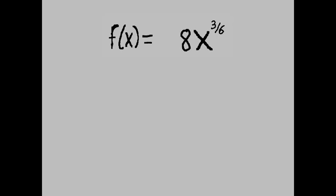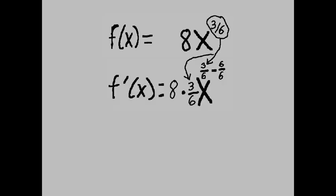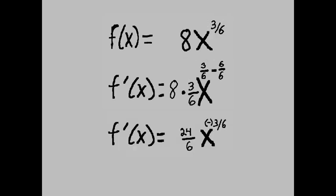f prime of x equals 8x to the 3 over 6 power. f prime of x equals 8 times 3 over 6 times x to the 3 over 6 minus 6 over 6 power, which equals 24 over 6 x to the negative 3 over 6 power, which equals 4x to the negative 1 half power.